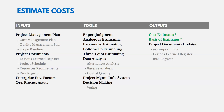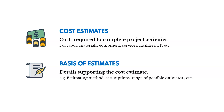Back to the ITTOs for estimate costs, the key outputs are cost estimates and basis of estimates. Cost estimates are the costs required to complete project activities — including labor, materials, equipment, services, facilities, and so on, not just people. The basis of estimates is the detail supporting the cost estimate: a description of how we came up with the estimate, what assumptions we made, maybe a range of possible estimates.